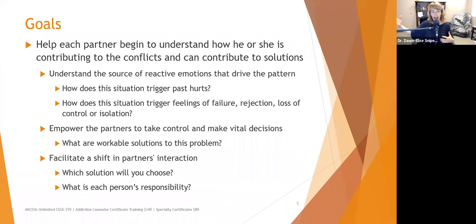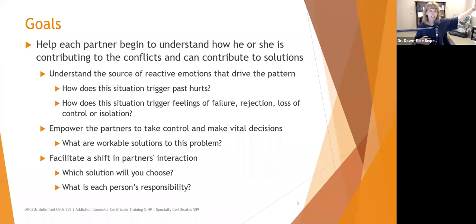We want to facilitate a shift in partners' interactions. Instead of getting to a stalemate or screaming at each other, identify alternate interactions. When you start to feel frustrated, abandoned, or deserted — instead of screaming, yelling, stomping out of the room, avoiding going home, whatever your current reaction is — what other solutions are available to you? Let's start making a list of what those things are so people can start thinking about different solutions.